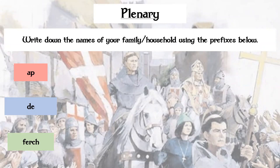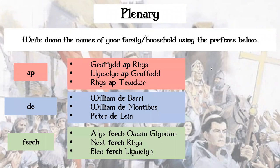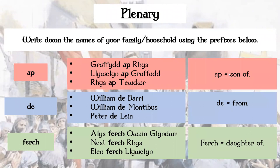Finally, the last thing we're going to do in this lesson: I want you to think back to the beginning of the lesson where we discussed Ap, De, and Ferch. As an activity, I want you to write down the names of your family members or your household using these prefixes — Ap, Griffith Ap Rees, William de Barry, Alice Ferch, or similar examples. Remember that Ap means son of, De means from, and Ferch means daughter of. This is the final activity of our lesson, and I will see you next time.